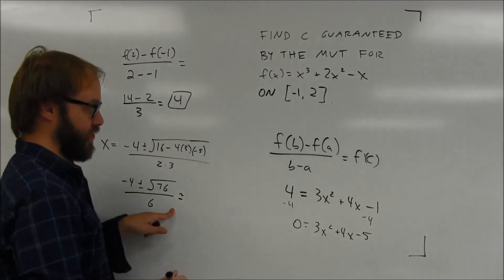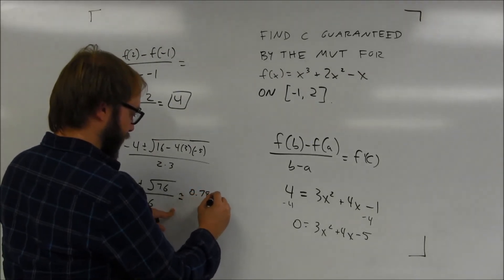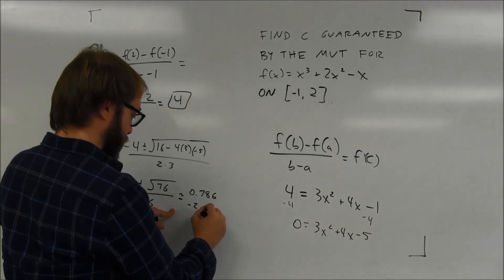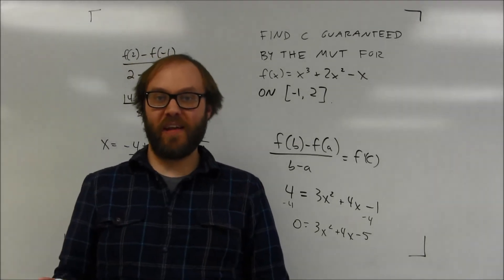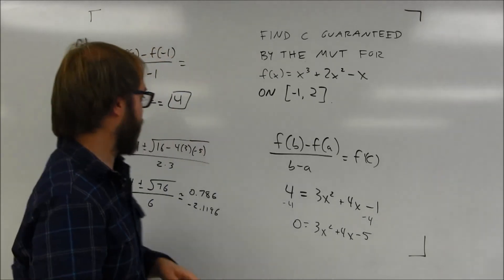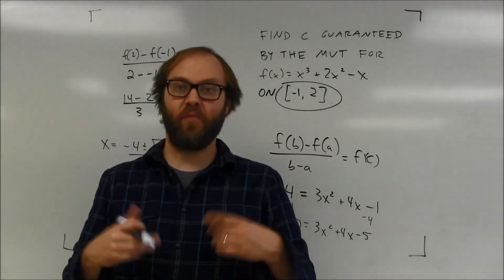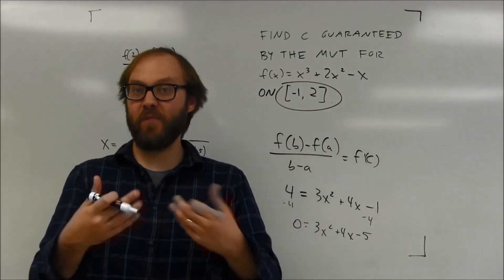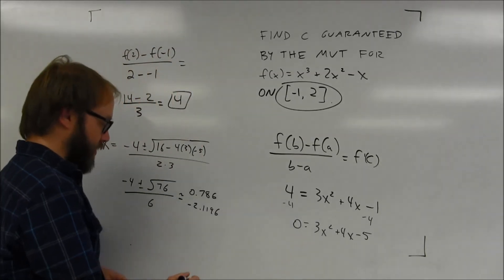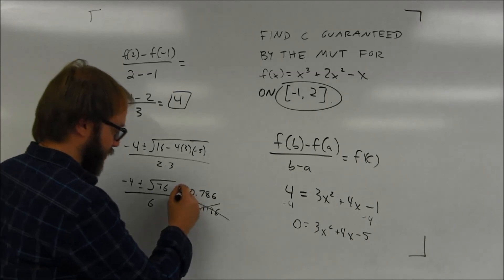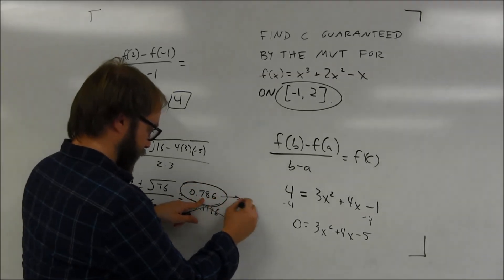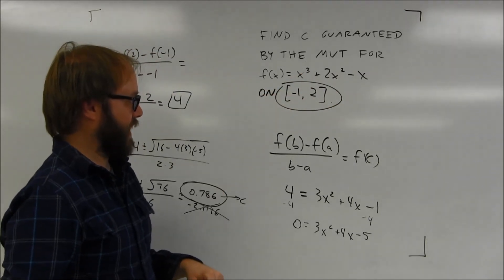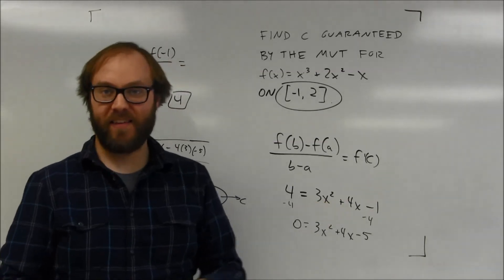It looks like there are two answers, but the mean value theorem only guarantees values inside the interval between negative 1 and 2. Notice that negative 2.1196 is outside the interval, so although it works mathematically, it's not guaranteed by the mean value theorem. That means in this problem, the only c value guaranteed by the mean value theorem is approximately 0.786 — the x value where the average rate of change equals the slope of the tangent line.